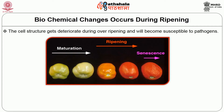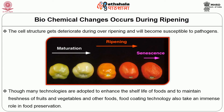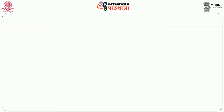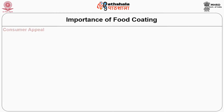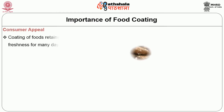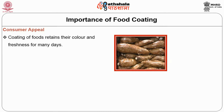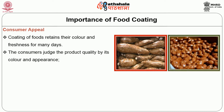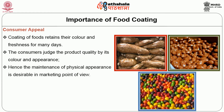Figure 1 explains the maturation, ripening, and senescence of tomato fruit. Though many technologies are adopted to enhance the shelf life of foods and maintain freshness of fruits and vegetables, food coating technology also plays an immense role in food preservation. Coming to the importance of food coating, the first one is consumer appeal. Coating of foods retains their color and freshness for many days. The consumer judges product quality by its color and appearance, so maintenance of physical appearance is desirable from a marketing point of view.